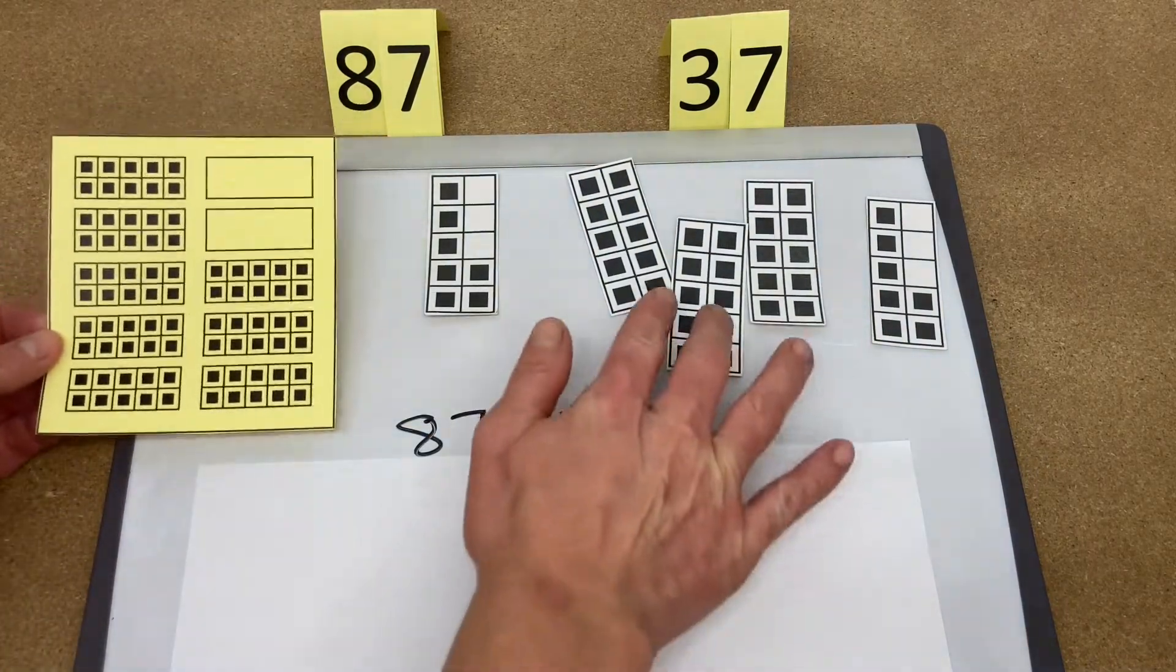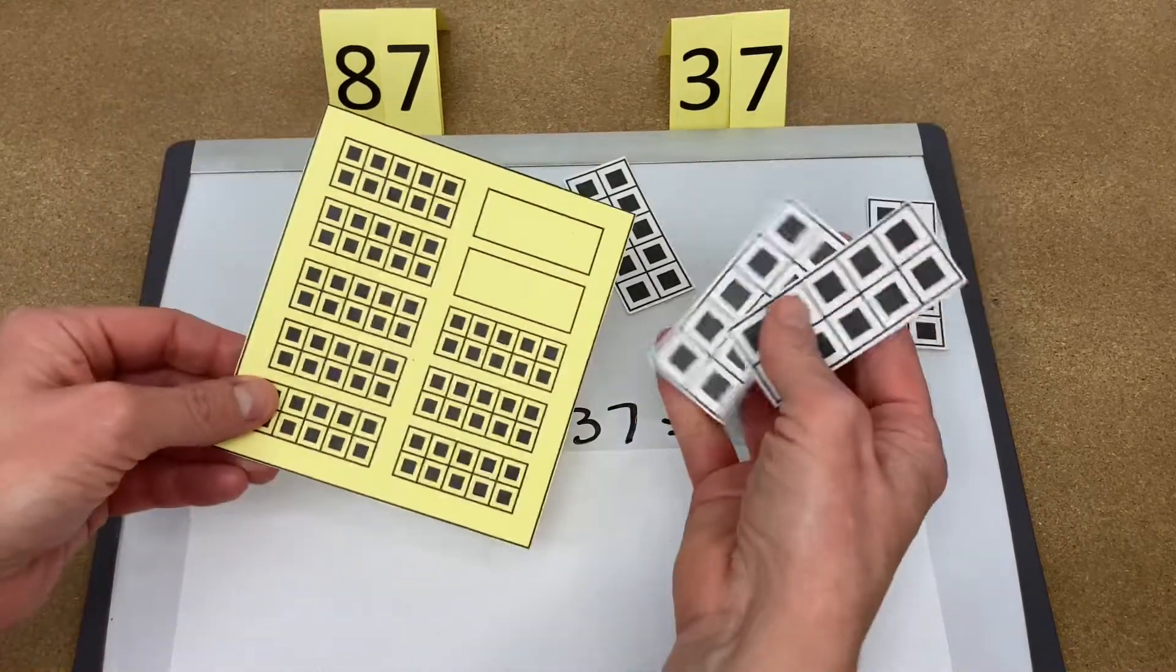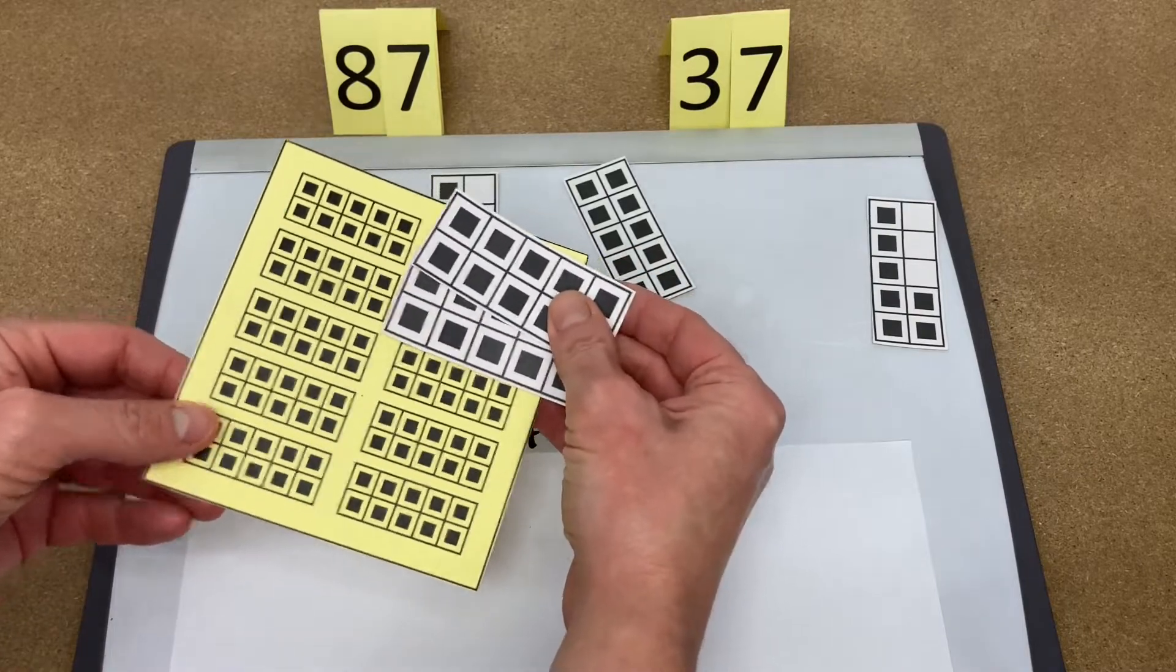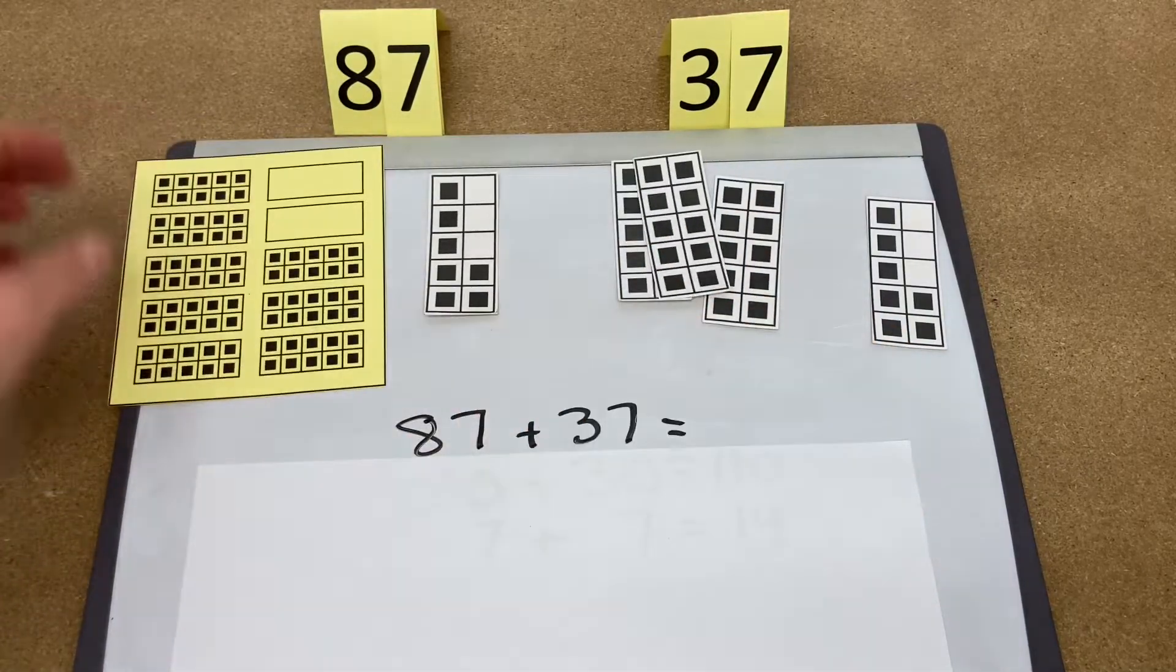80 plus 30, we see that there's two spaces here, so we're going to take 20 from the 30, jump in here to make a full 100, and then we have 10 left over. So 80 plus 30 is 110.